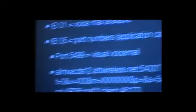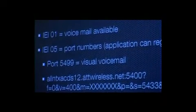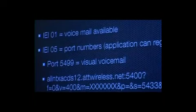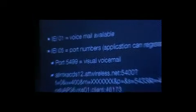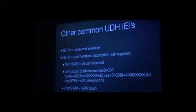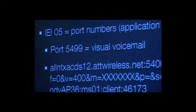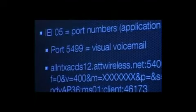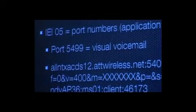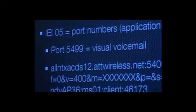Other IEI types you'll see: IEI 0 is concatenated messages, IEI 1 tells you that you have voicemail waiting, IEI 5 says this is designated for a port — just like TCP or UDP, applications can register for SMS ports. On iPhone, port 5499 is used for visual voicemail — that feature where you can see all your voicemails. The data for a visual voicemail looks something like a URL, and that's where the phone knows to go grab the sound file.